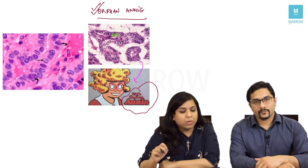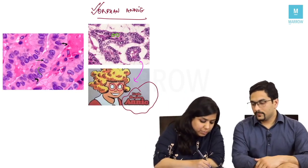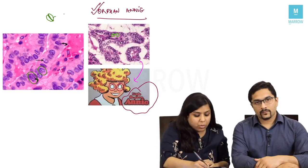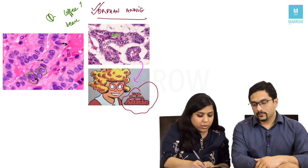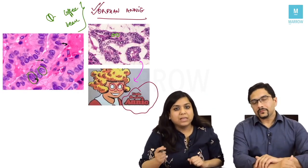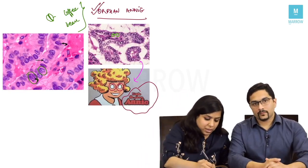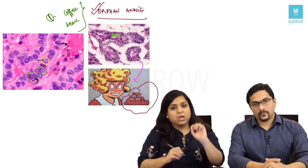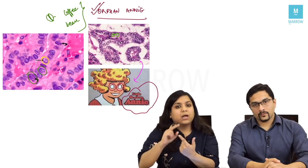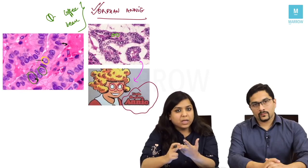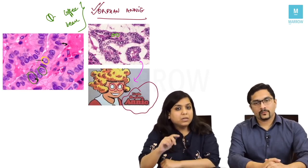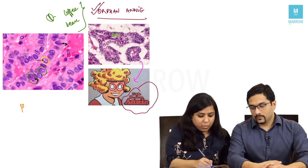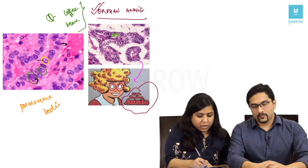Two other important nuclear features in papillary carcinoma of thyroid: some nuclei have a groove in the middle, resembling a coffee bean — these are called coffee bean nuclei. Additionally, nuclear pseudo-inclusions are seen — not true inclusions, but pseudo-inclusions inside the nucleus. So four histological features to look for are: papillae with fibrovascular cores, orphan Annie nuclei, nuclear pseudo-inclusions, and coffee bean nuclei. The fifth important feature is psammoma bodies, also a characteristic finding.